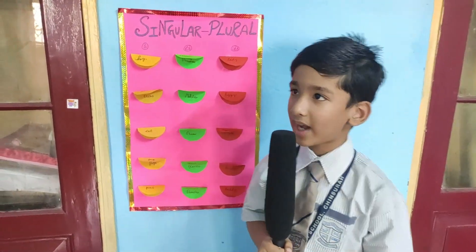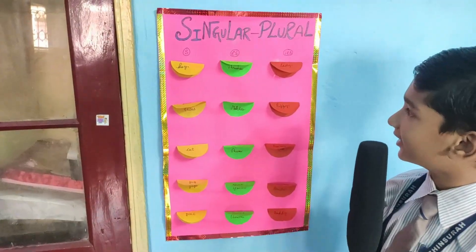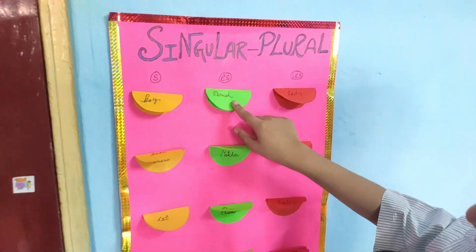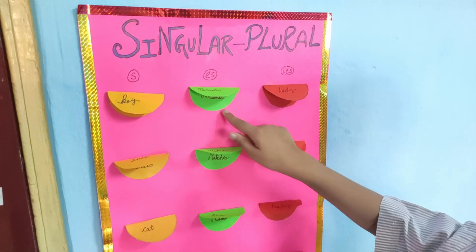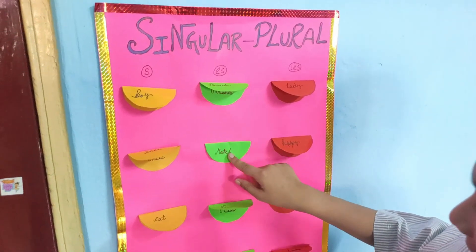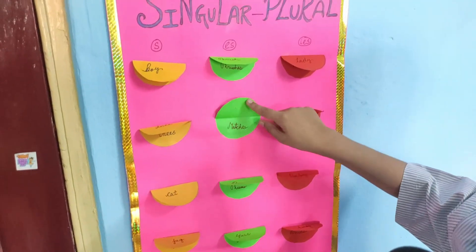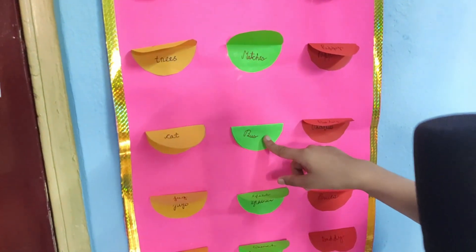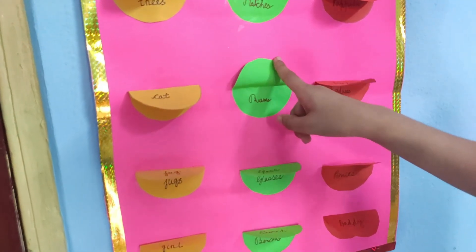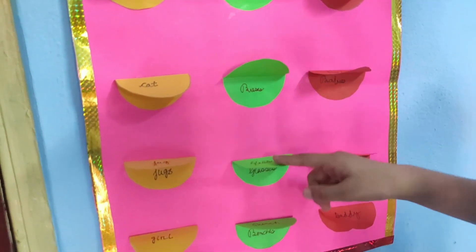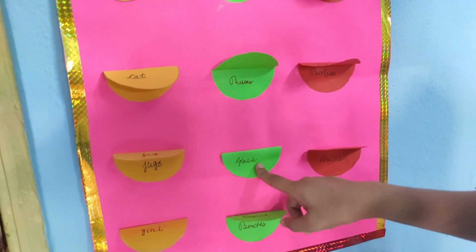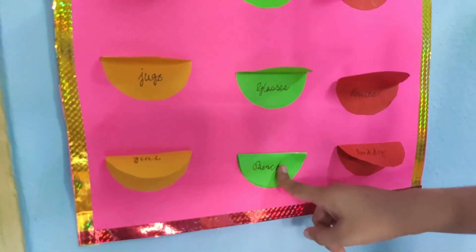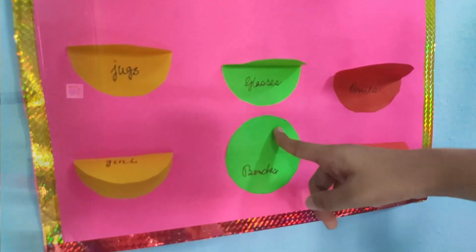In the second column, we have to add ES. For example: brush → brushes, match → matches, bus → buses, glass → glasses, bench → benches.